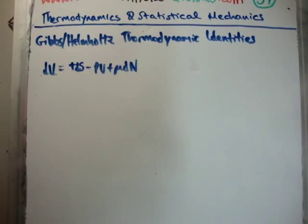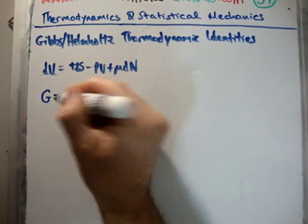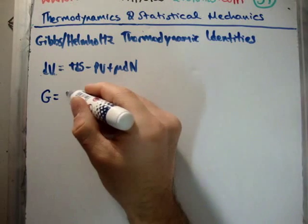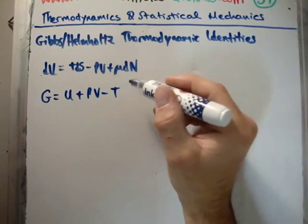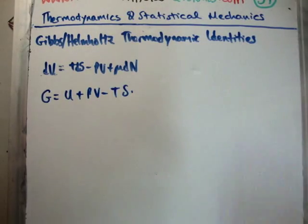Okay, next, let's look at the Gibbs free energy. So this time we're at constant pressure and constant temperature. That's going to be equal to U plus PV minus TS.